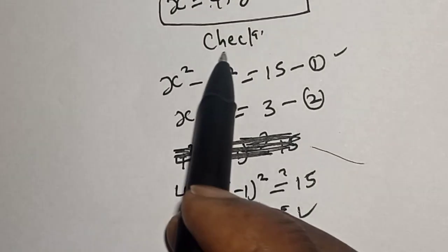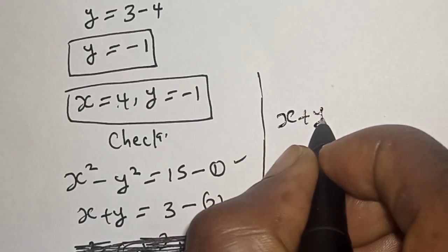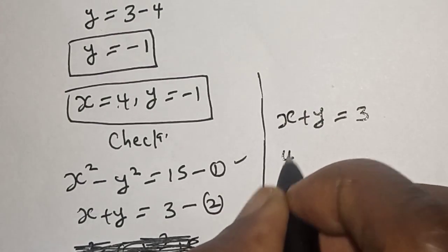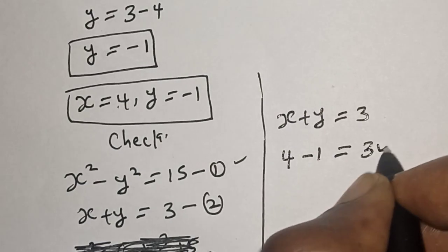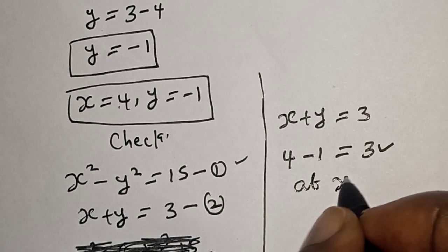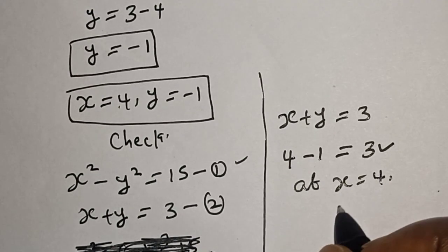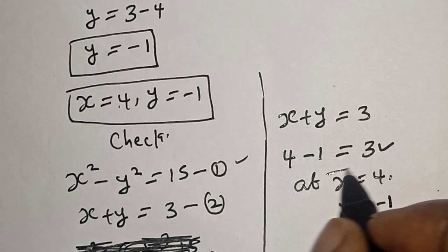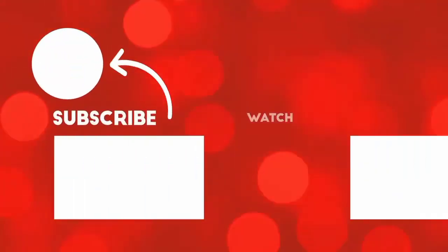Also checking with the second equation: s plus y must equal 3. With x equal to 4 and y equal to minus 1, this gives 3, which is also true. We satisfy both given equations at s equal to 4 and y equal to minus 1. If you enjoyed the class, please don't forget to like, share, comment, and subscribe. Thank you.